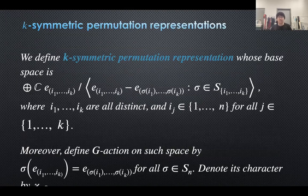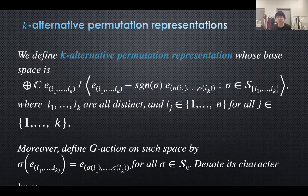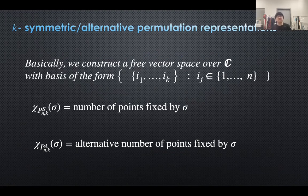Now we want to generalize the idea of permutation representations. For this purpose, we define symmetric permutation representations and alternative permutation representations. The definition is quite involved, but the idea is simple — we construct a free vector space over C on the set of tuples (i1 to ik), where each ij is an element in {1 to n}. We skip the technical details here.